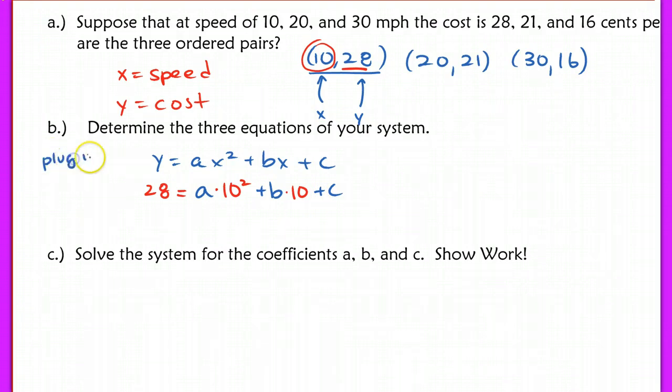The only thing I'm substituting in for are the x and the y. So you're plugging in x and y. So one equation here is going to be found by simplifying this. I get for that equation 28 equals 100a plus 10b plus c.